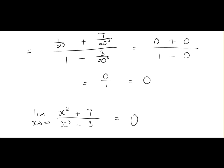So our final answer: the limit of x approaching infinity of x squared plus 7 over x cubed minus 3 is equal to 0. That means within this function, as x approaches infinity, as x gets larger and larger, the y value approaches 0.